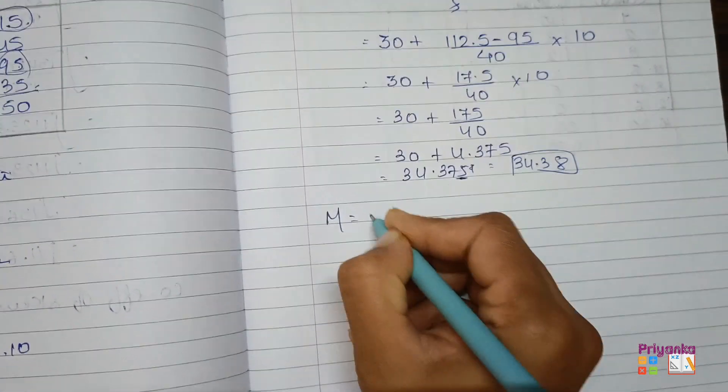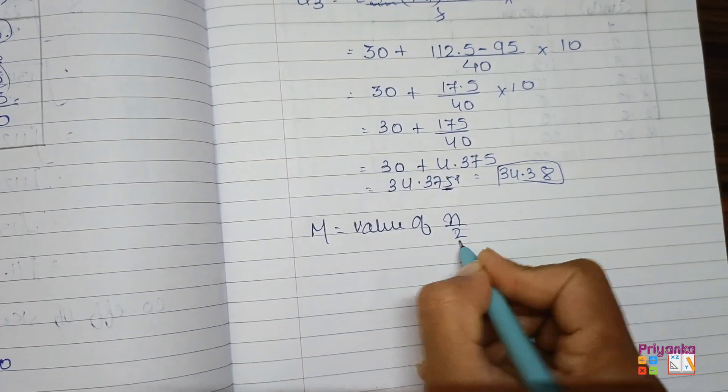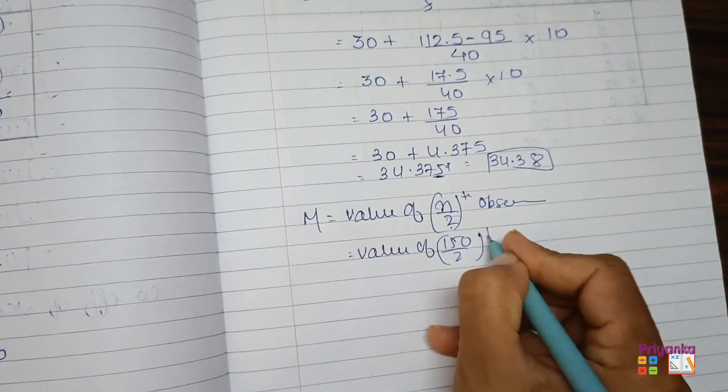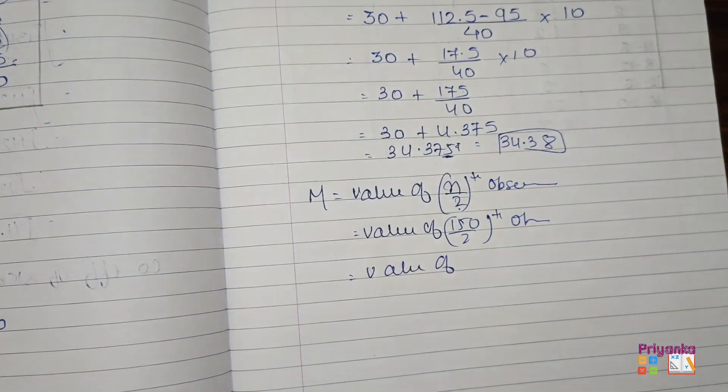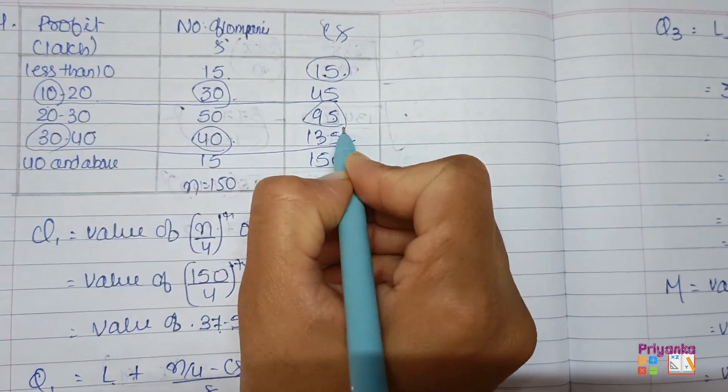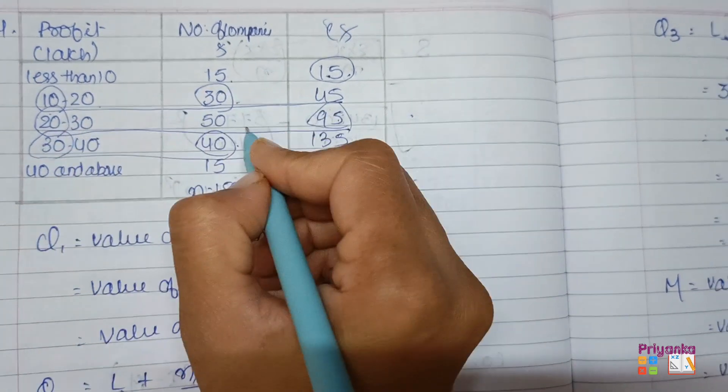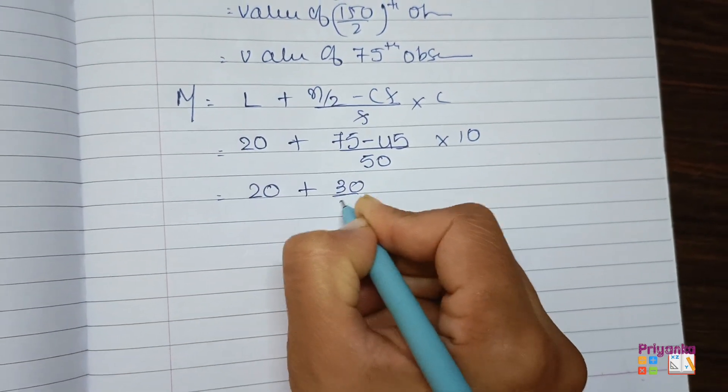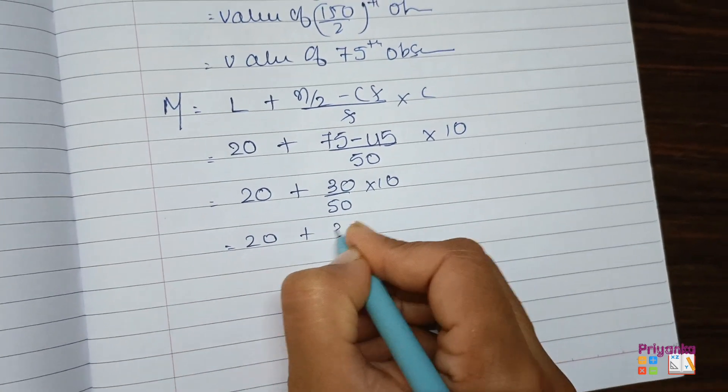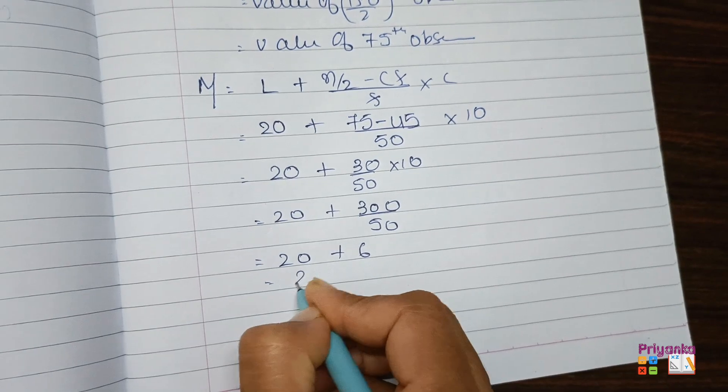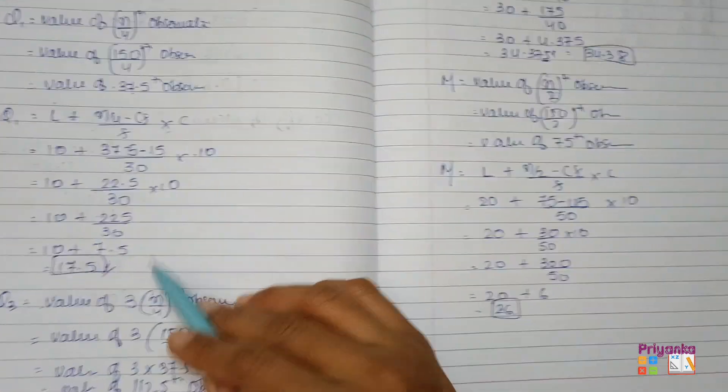Next we need is median. Now for median, n upon 2, remember, 150 divided by 2, that is 75th observation, which will come in this 95. Lower limit 20, frequency 50, and cumulative frequency 45. The value in the median formula, 30 upon 50 into 10, that's 20 plus 300 divided by 50. Get them divide, you will get 6, and the answer is 26. So here we get the value of median, Q1, and Q3.